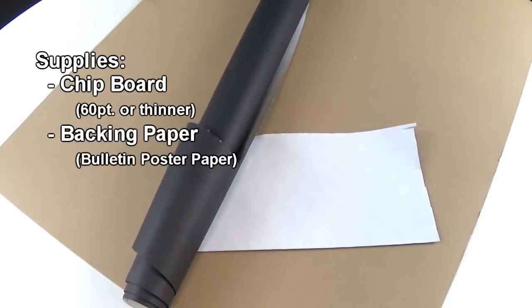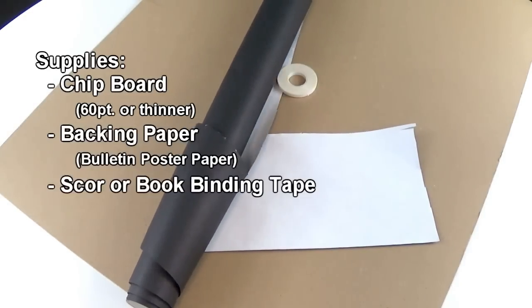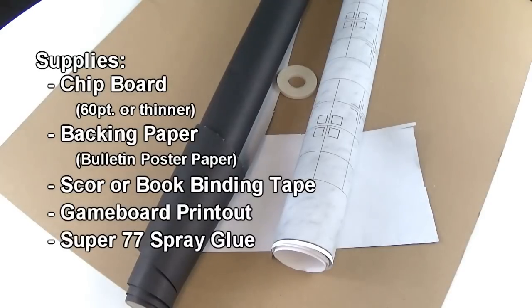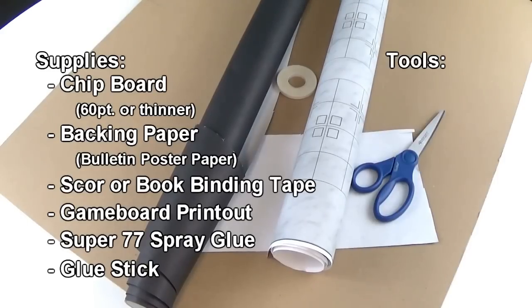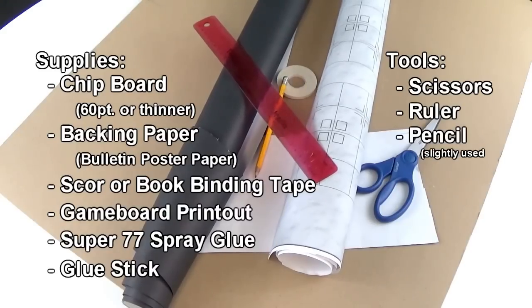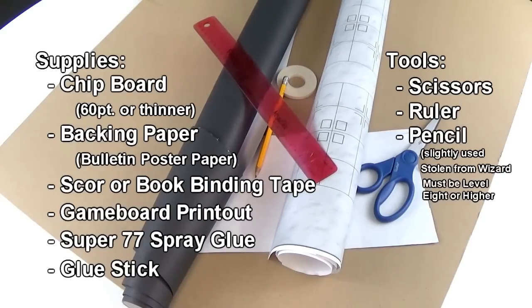Our supply list looks like our non-folding list. We'll need chipboard, backing paper, book binding tape, and our board printout. Spray glue and a glue stick are also needed, but not shown here because I forgot, so get off my back already. Our tools today include scissors, a ruler, and a slightly used pencil stolen from the inventory of an 8th or higher level wizard, successful pickpocket roll needed.